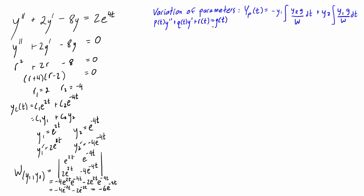So just to be super clear that we know exactly what's what, let's write down what we have for Y1, Y2, G, and W. So Y1 was equal to e to the 2t. Y2 is e to the negative 4t. G of t is right here, 2e to the 4t, given to us in the problem. And the Wronskian of Y1 and Y2 is negative 6e to the negative 2t.